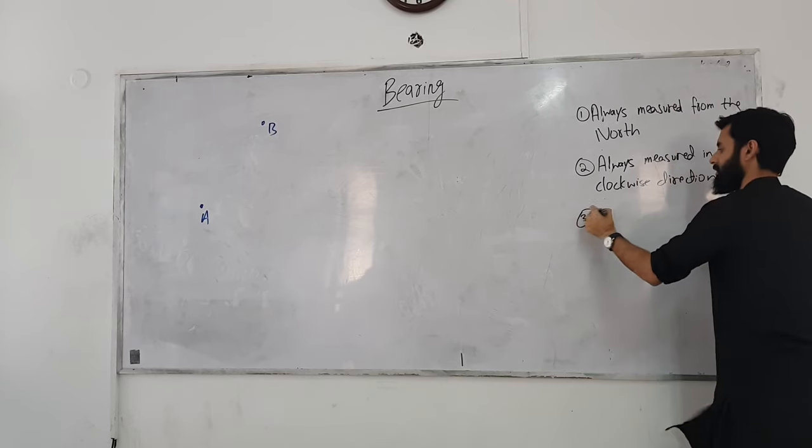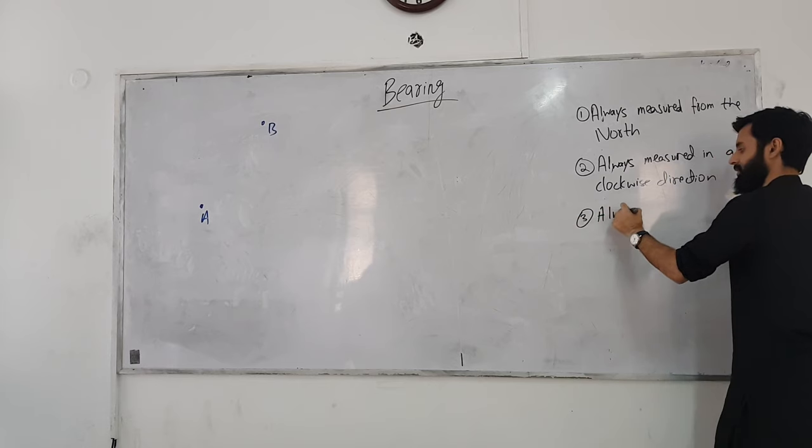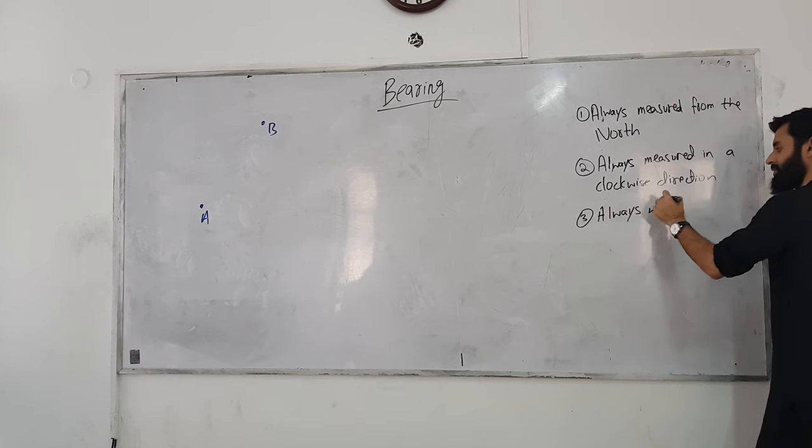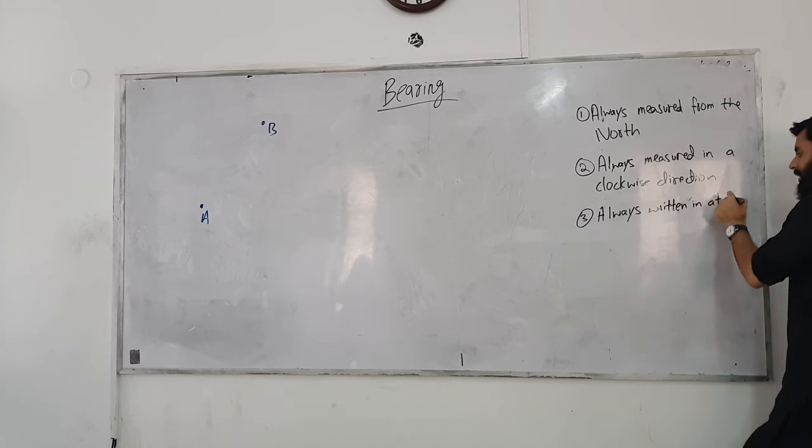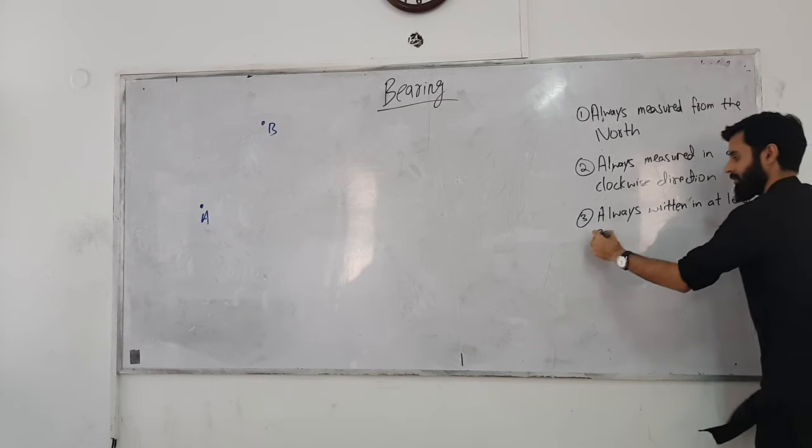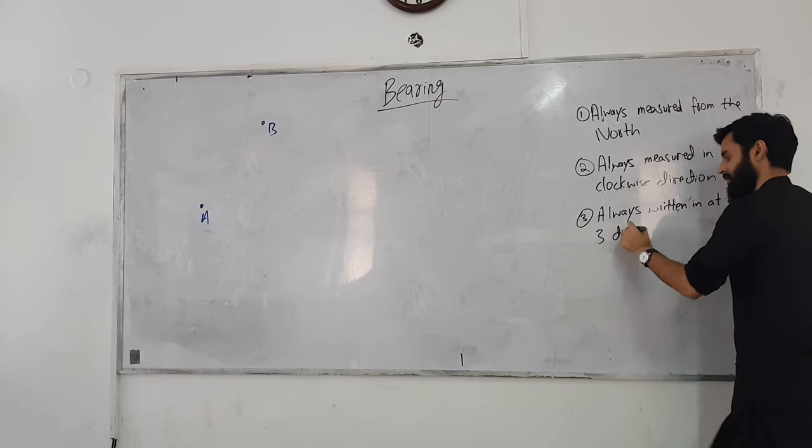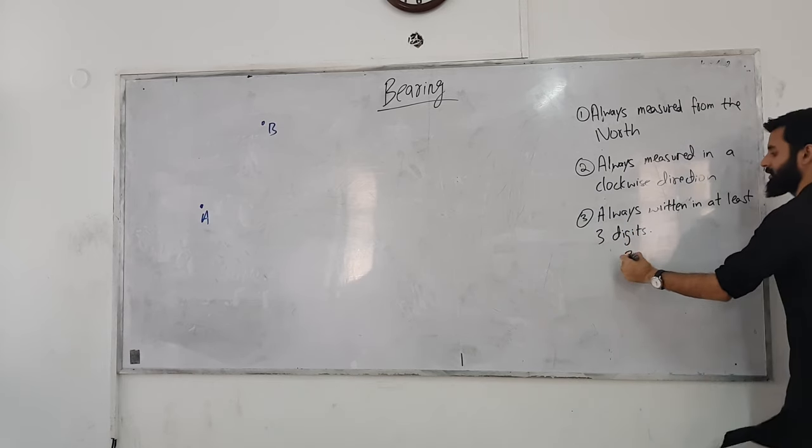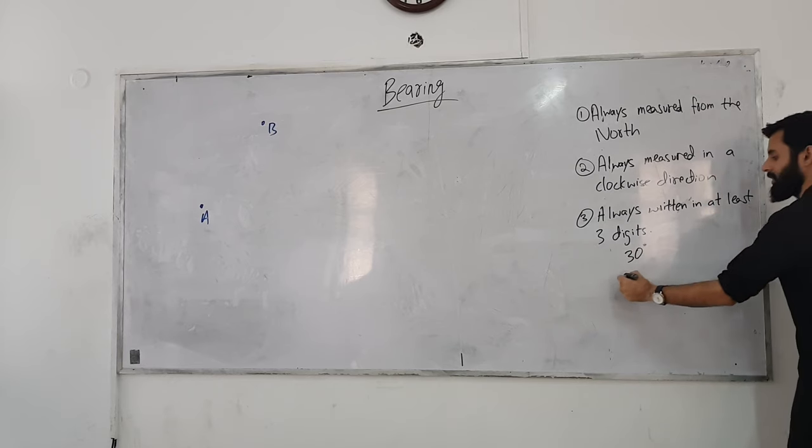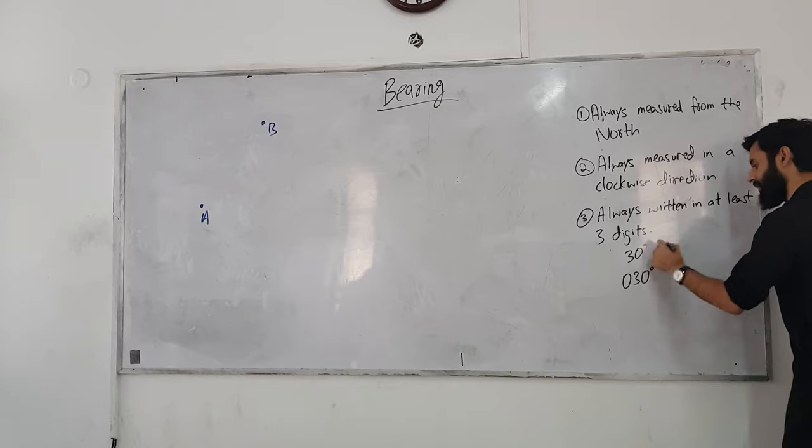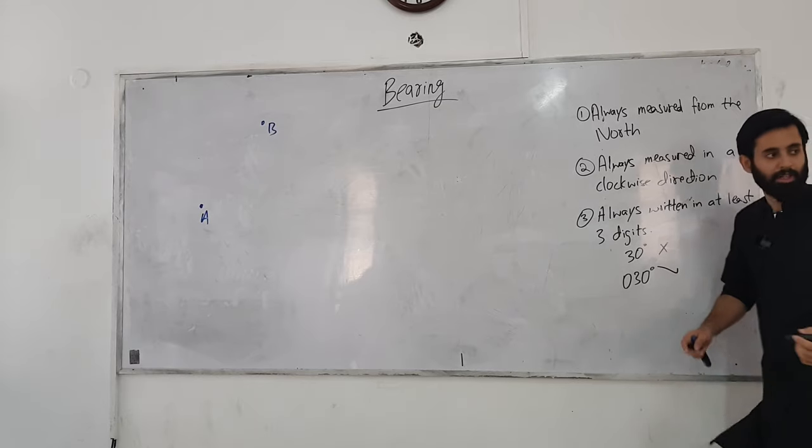And rule number three is that it's always written in at least three digits, meaning that if the answer is, suppose it comes out to be 30 degrees. So, how do we write it? We write it 0, 3, 0. 30 degrees will be incorrect. 0, 3, 0 is the correct way of writing.